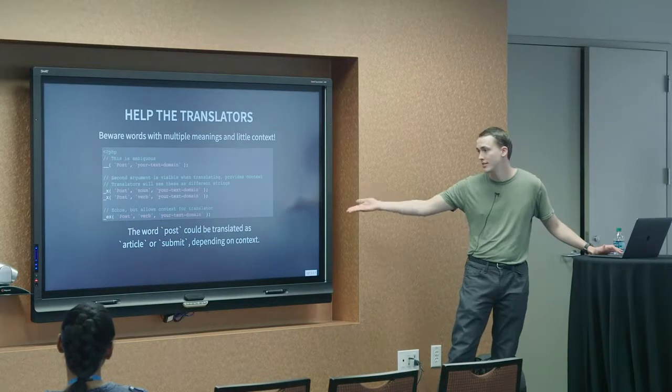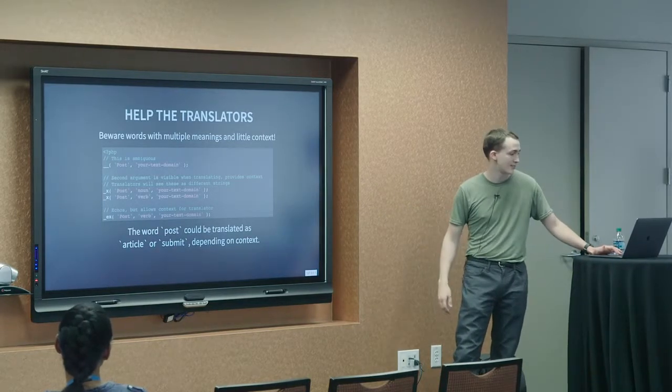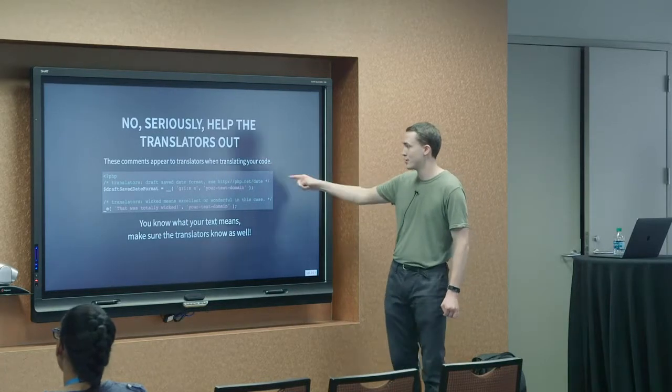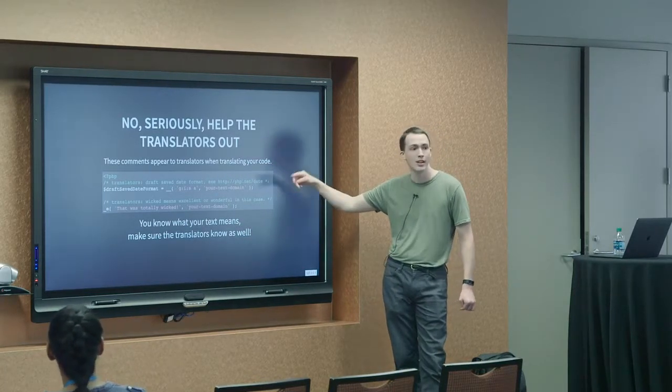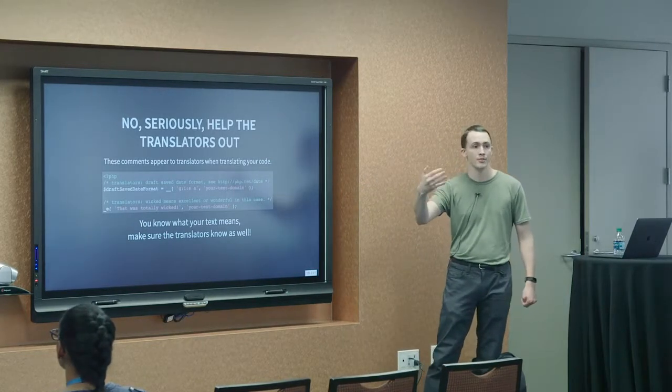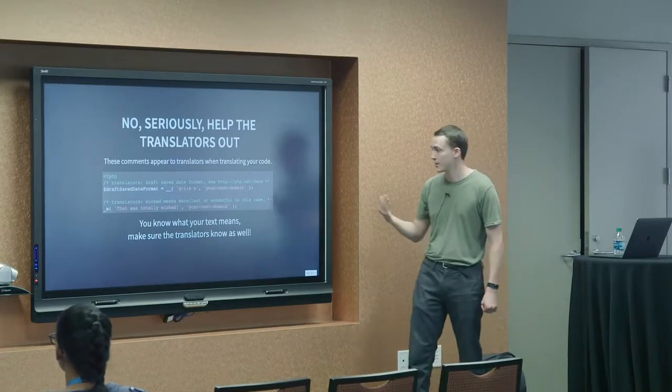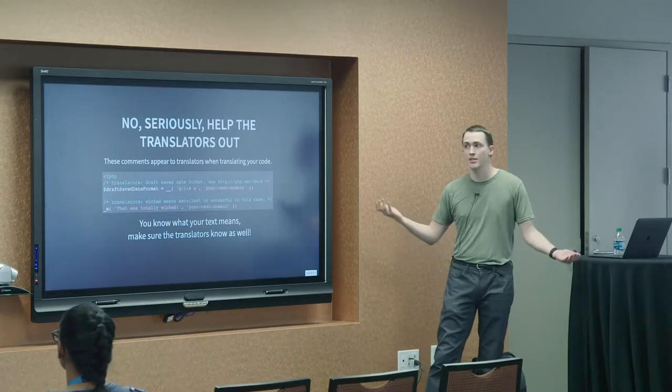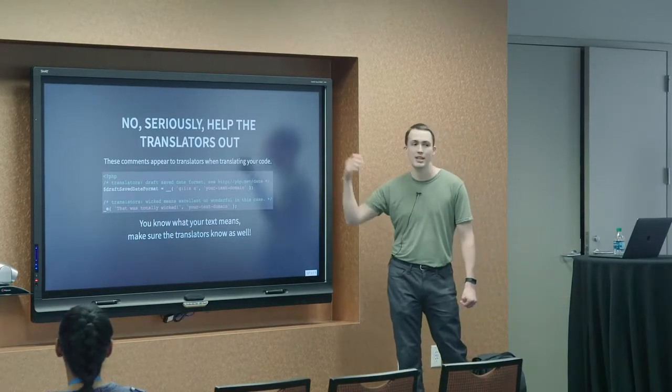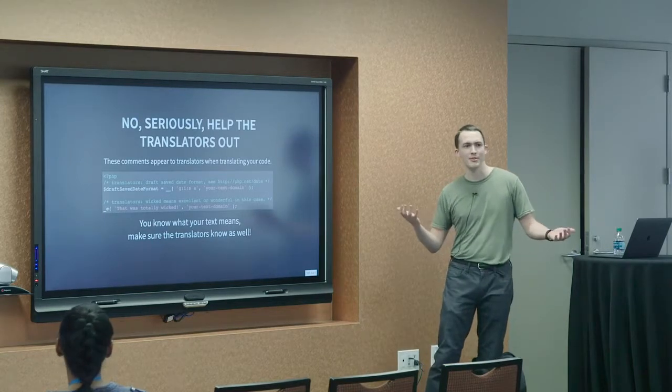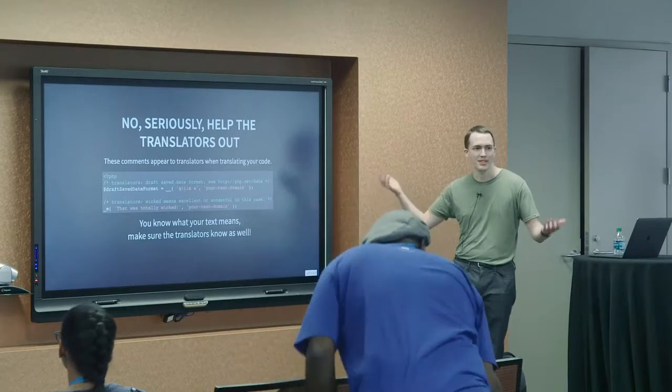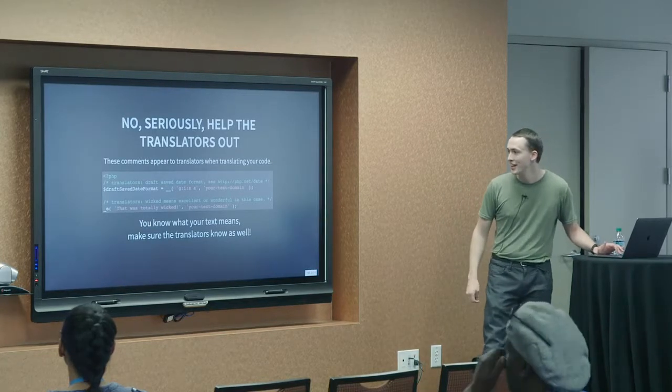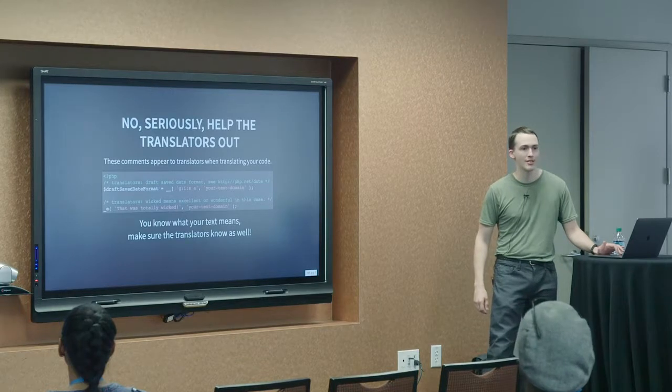And there is also a version of the underscore x function that will echo as well. And then, oh yeah, the word post could be translated as article or submit depending on context. But seriously, help out the translators. So, other things that you can do that are cool is if you do a comment right before the line, that comment will actually appear in the files for the translators to see when they're translating. So, especially in the second use case, the text, that was totally wicked. Not everyone, especially if English is not their first language, would understand what wicked would mean in that use case. They might think, oh, that was evil? Why was it evil? But no, it was something cool. It was excellent. It was wonderful. And yes, I did steal that from the Incredibles.